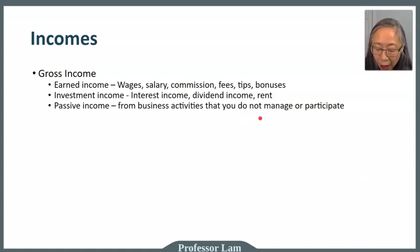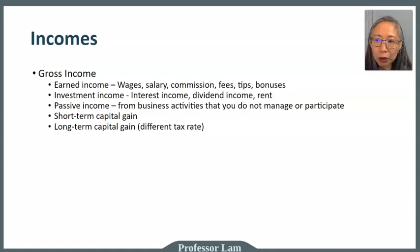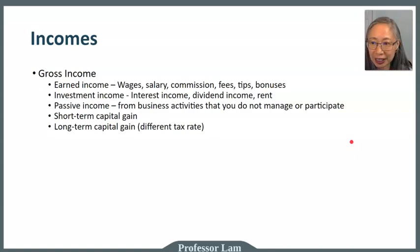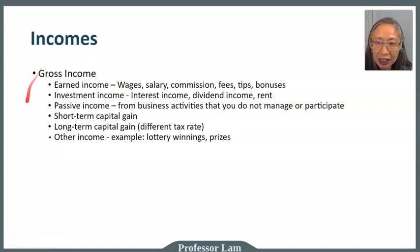Passive income is different from investment income — it comes from a business that you do not manage, such as a passive partnership. There is also short-term capital gain and long-term capital gain, which have different tax rates. Capital gain is basically a profit you make from investing. Other types of income include winnings from gambling, a lottery, or prizes won in a competition. All of these are considered income and are subject to tax.